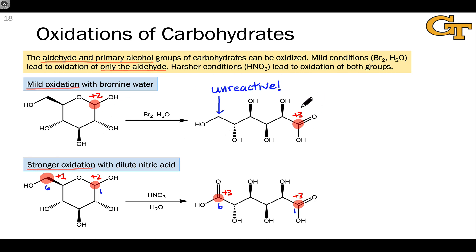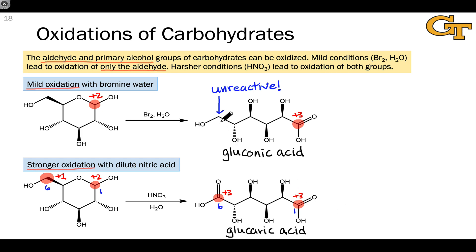The product of mild oxidation, which contains a single carboxylic acid group, is called gluconic acid. The product of strong oxidation conditions — the diacid — is called glucaric acid. The key point is that we can oxidize either the aldehyde alone, or both the aldehyde and the primary alcohol in a monosaccharide, just by a change in reaction conditions. Under both of these conditions, the secondary alcohol groups are unreactive.